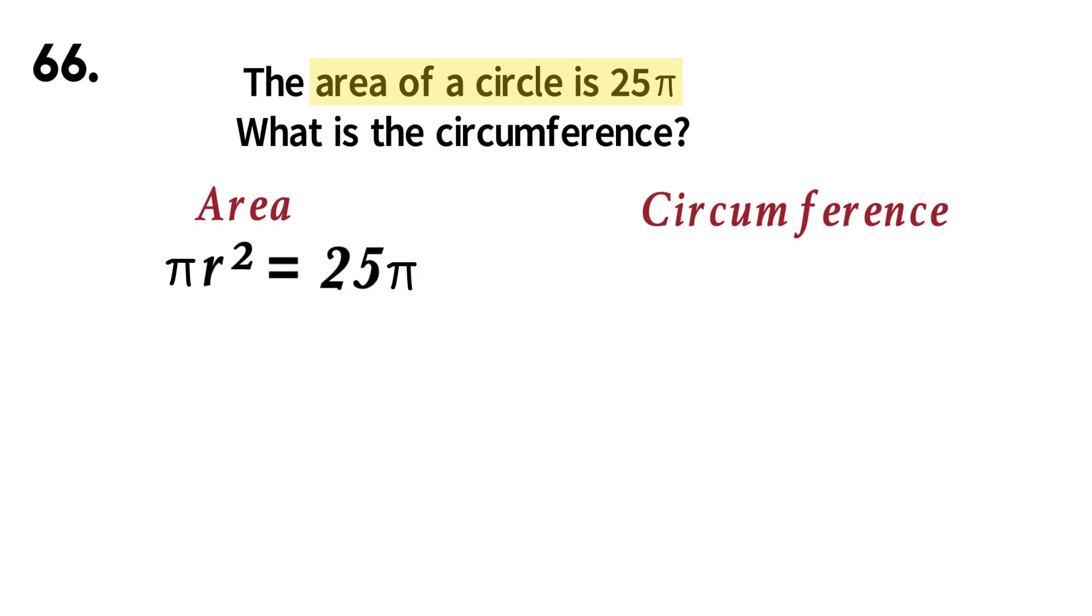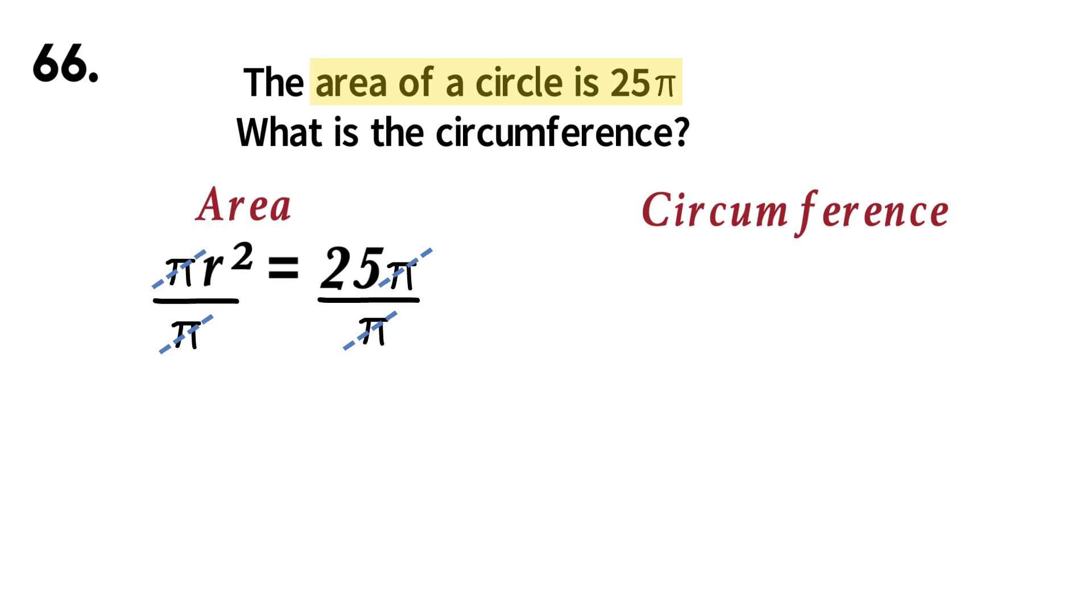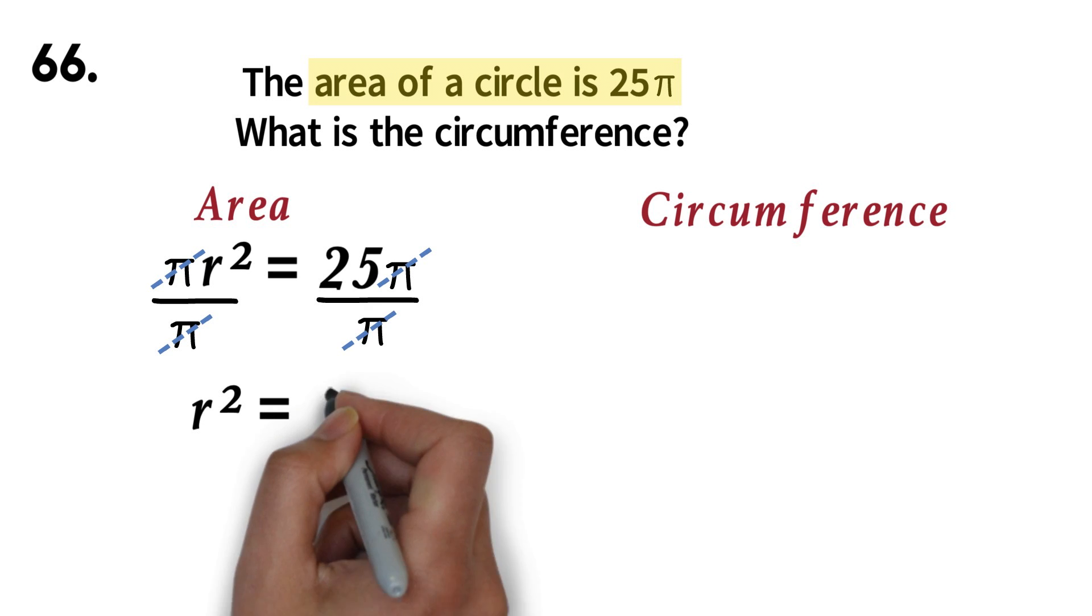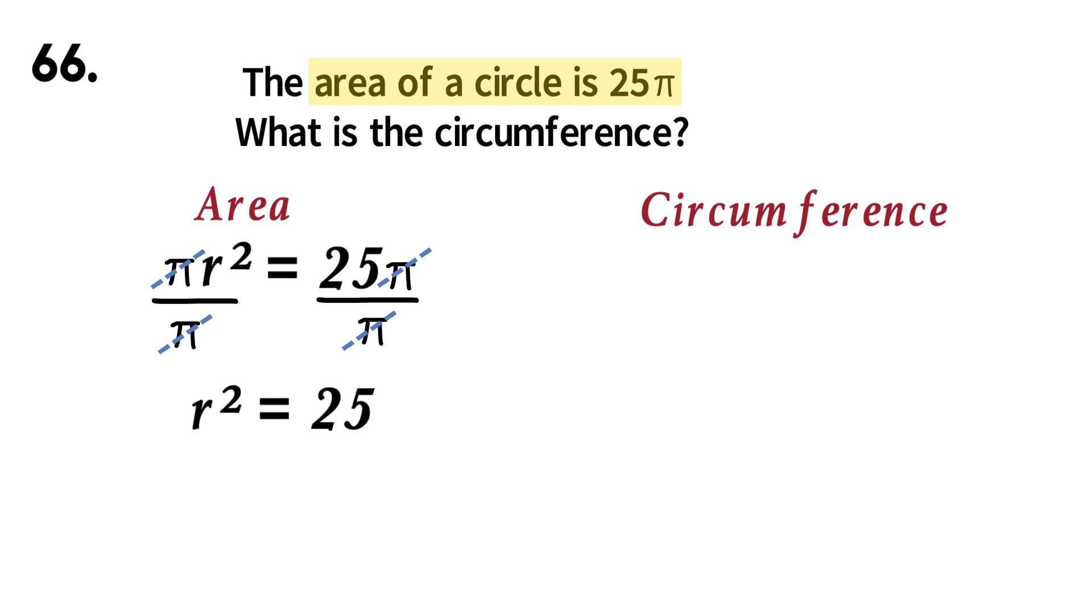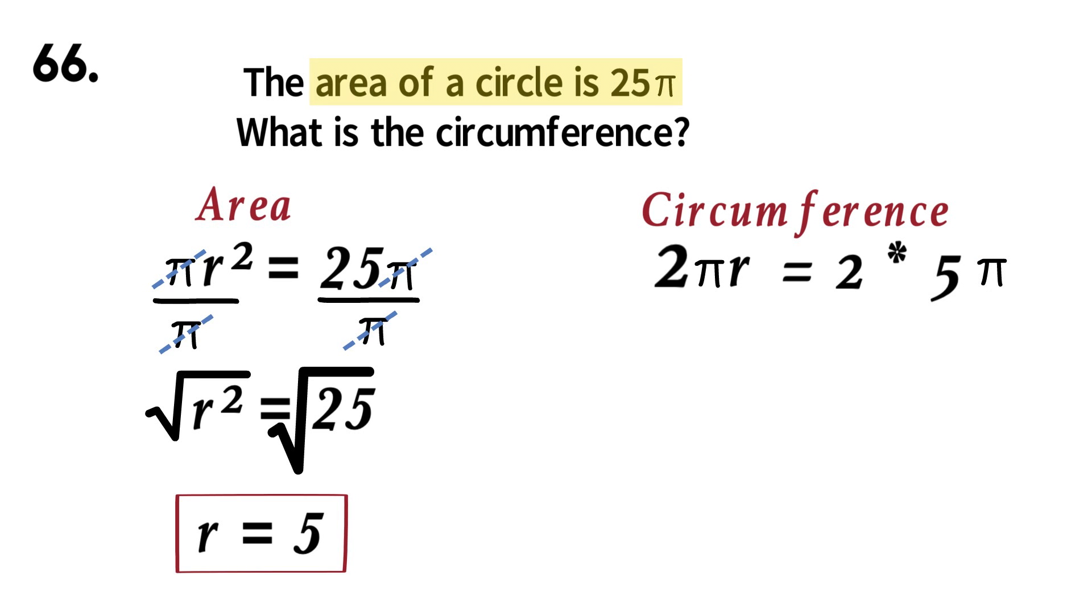We are told the area is 25 pi. We can equate the two. Divide both sides by pi. The pi's will cancel out. We now have r squared equals 25. To remove the square, we will find the square root of both sides. Square root of r squared is r. Square root of 25 is 5. So r is 5. Now, to find the circumference, the formula is 2 pi r. We have our r to be 5. So we have 2 times 5 pi. This will give the circumference as 10 pi.